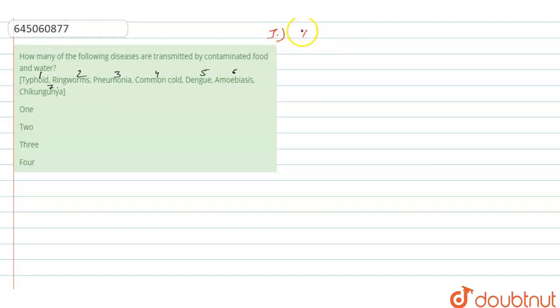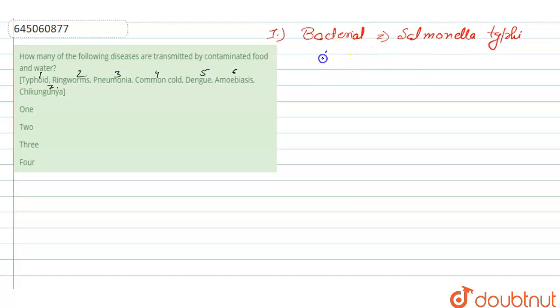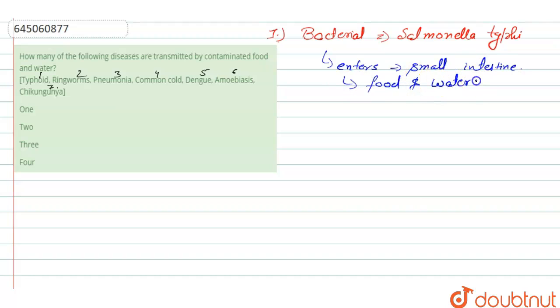Starting with the first, which is typhoid. Typhoid is a bacterial disease, and the bacteria responsible for it is Salmonella typhi. This disease spreads through contaminated food and water, and the bacteria enters into the small intestine via contaminated food and water. So typhoid is the correct one for our question.